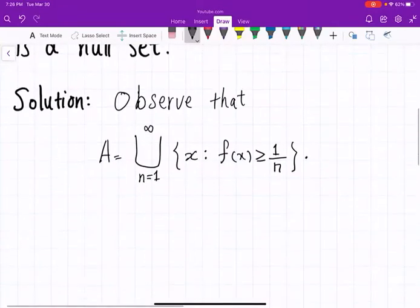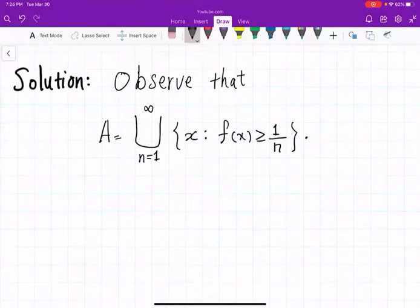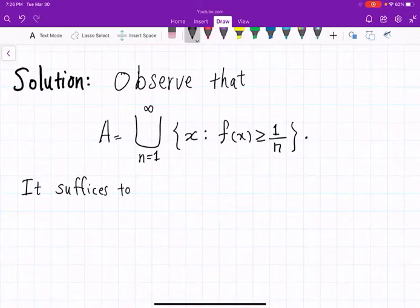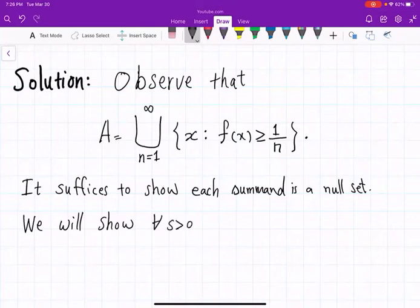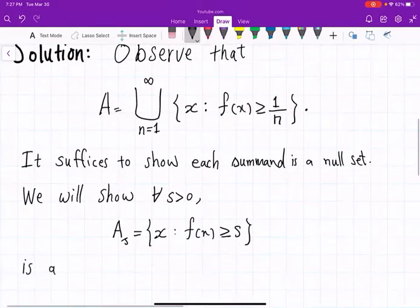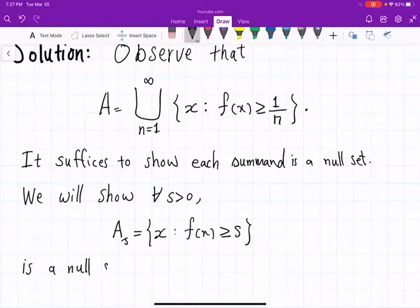And we know that null sets are unchanged under countable unions. In other words, it suffices to show each A_n, let's call them, is a null set. And there's nothing special about having one over n there. So I will actually show that for every positive number you pick, the set A_s, let's call it, of points where f(x) is bigger than or equal to s is a null set. This is proving more than proving each A_n is null.